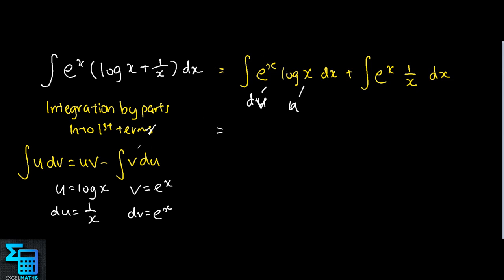Our next step will be uv, so that's log x times e^x minus the integral of v, which is e^x, times du, which is 1/x, plus c, plus the integral of e^x times 1/x dx.